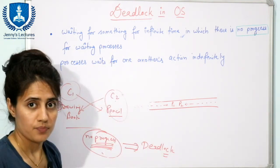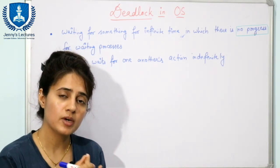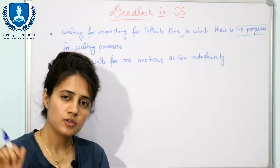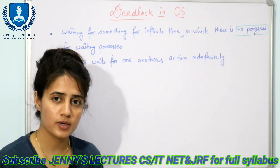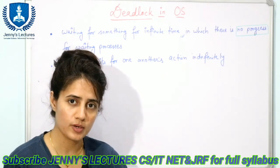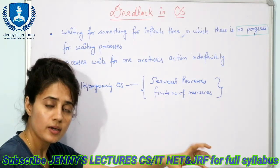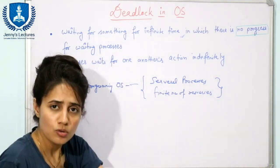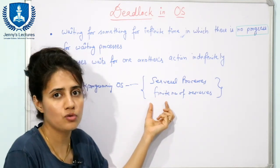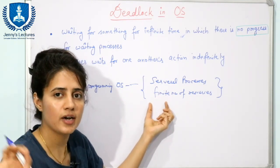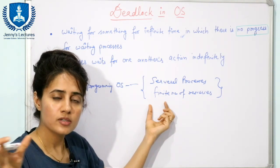Now coming to the operating system context: deadlock occurs in operating systems where multiple processes are running. Multiple processes compete for resources in a multi-programming operating system. Many processes are running and many resources are also there, but resources are finite. If resources were infinite there would be no deadlock, but we have a limited number of resources — CPU, memory, I/O devices — and processes compete for them.